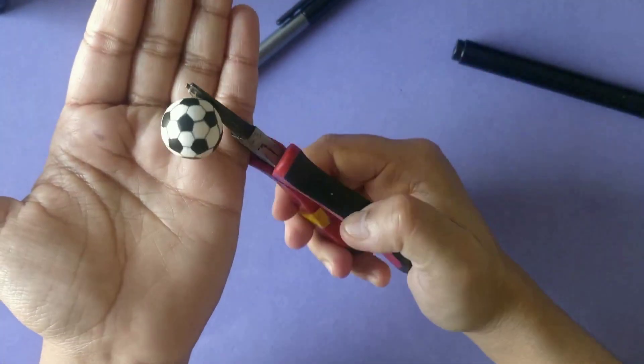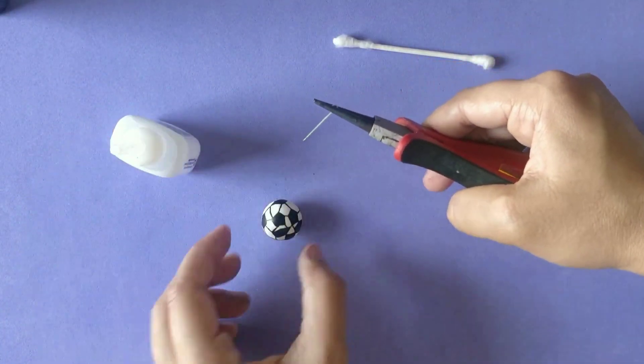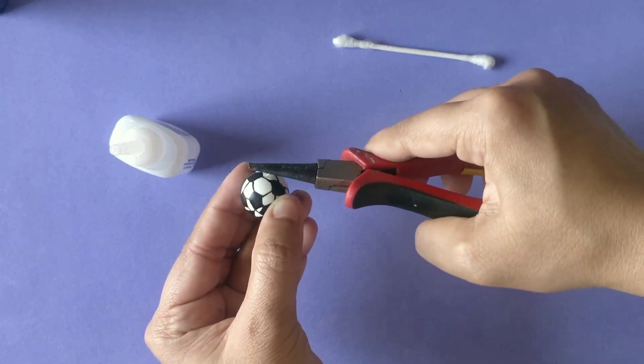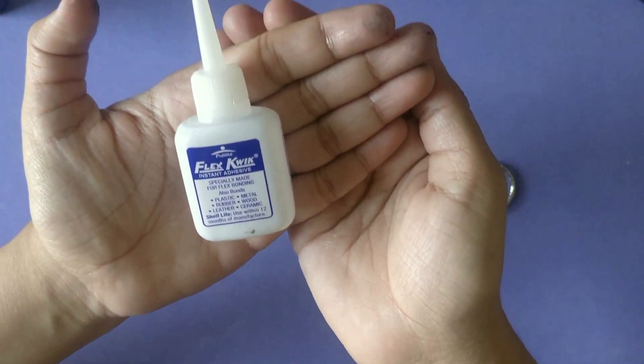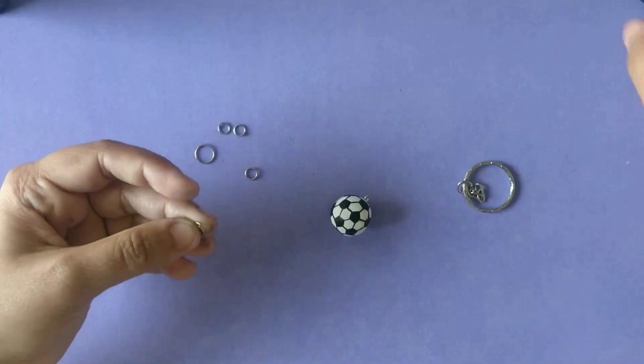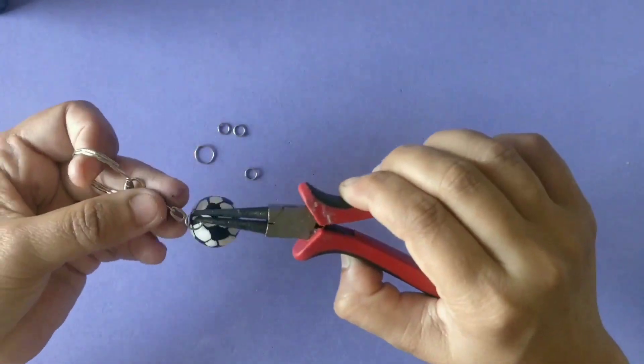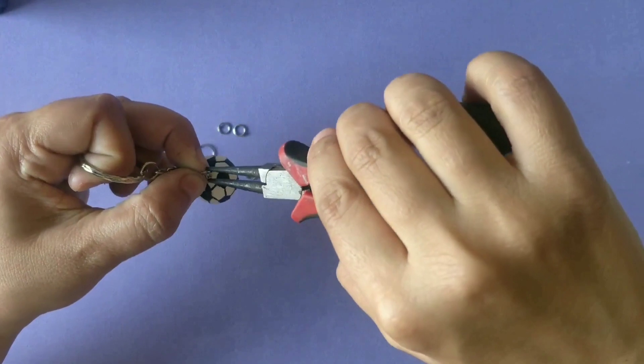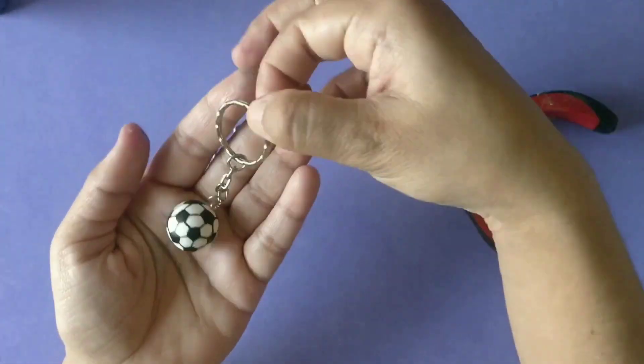After that I'm going to use glue and eye pin and assemble this football. Now our final step is to convert it into a keychain. The keychain is ready.